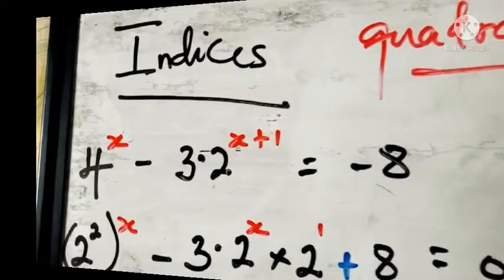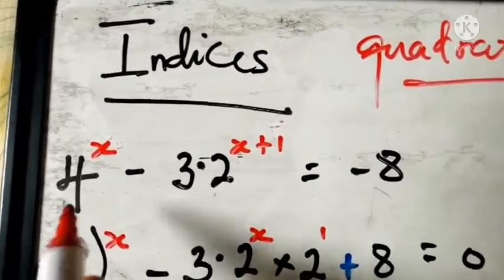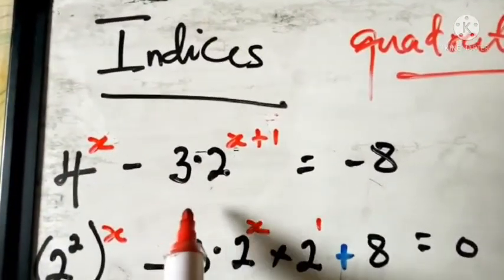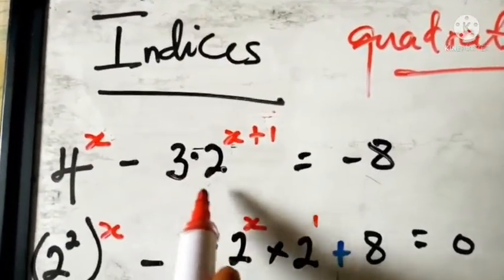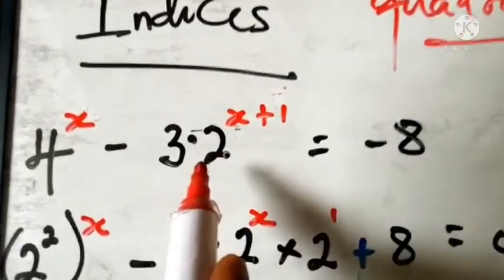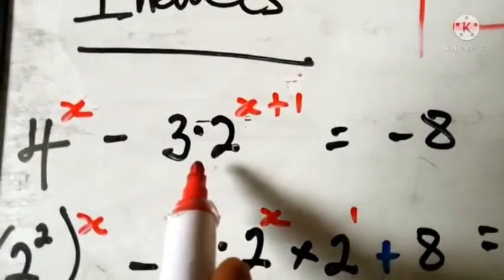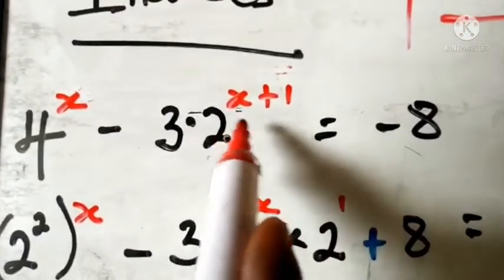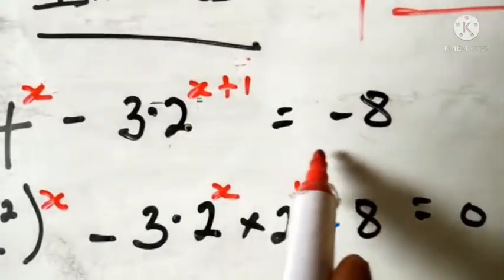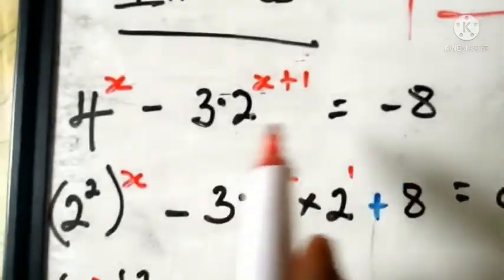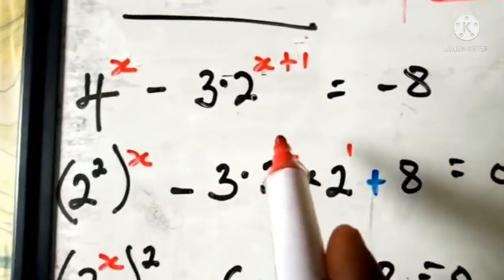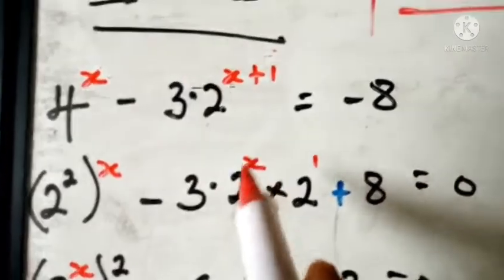From the question, we are given: 4 exponent x minus 3, multiplied by 3 times 2 exponent x plus one, and that is equal to minus eight. They say you should solve this. So how do you solve this type of problem? As I said earlier, you must have the idea of quadratic and how quadratic works.